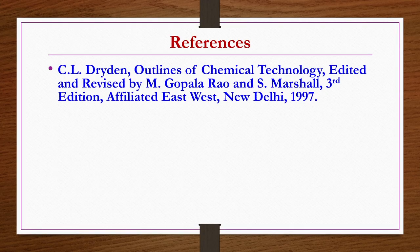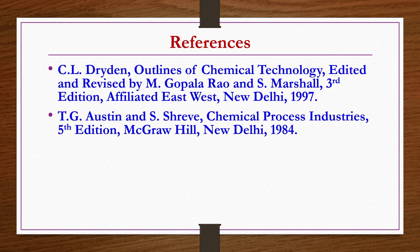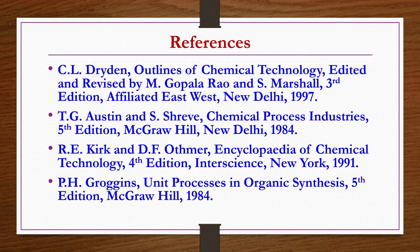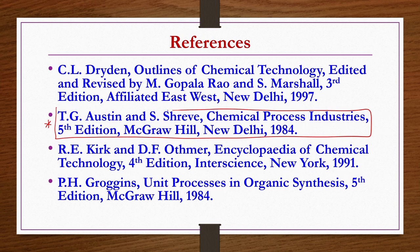References for today's lecture include: Outlines of Chemical Technology by Dryden, edited and revised by Gopal, Drau and Marshall, 3rd edition; Chemical Process Industries by Austin and Shreeve, 5th edition; Encyclopedia of Chemical Technology by Kirk and Othmer, 4th edition; and Unit Processes in Organic Synthesis by Groggins, 5th edition. Most of the lecture is prepared from these reference books. Thank you.